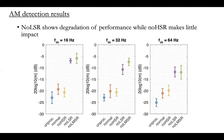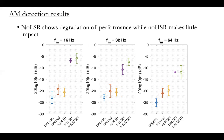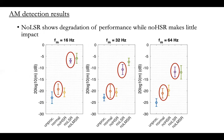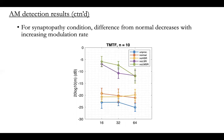Here are the results. Under conditions where we remove all high spontaneous rate fibers, performance didn't change much compared to normal hearing conditions. However, when we selectively remove low spontaneous rate fibers, the threshold got much worse for all three modulation rates. We also found that the amount of difference between the synaptopathy condition and normal condition got smaller with increasing modulation rate.